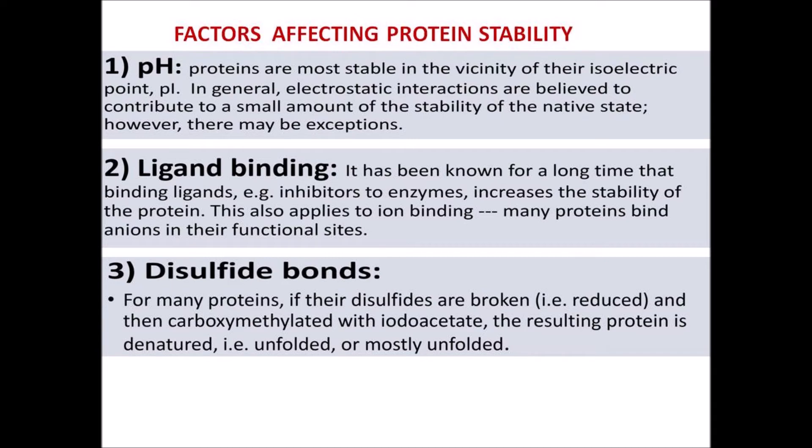The second factor is ligand binding. It has been known for a long time that binding ligands — for example, inhibitors to enzymes — increases the stability of the protein. This also applies to ion binding, as many proteins bind anions in their functional sites.